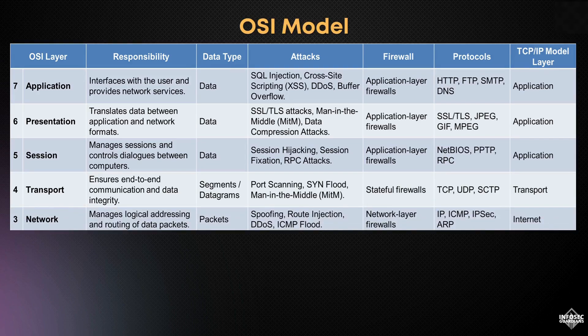Layer 3, the network layer, manages logical addressing and routing of data packets across different networks. It's crucial for directing data to its destination, but is also vulnerable to IP spoofing and route injection attacks. Network layer firewalls protect this layer, and protocols such as IP, ICMP, IPsec, and ARP are fundamental. This corresponds to the internet layer in the TCP/IP model.